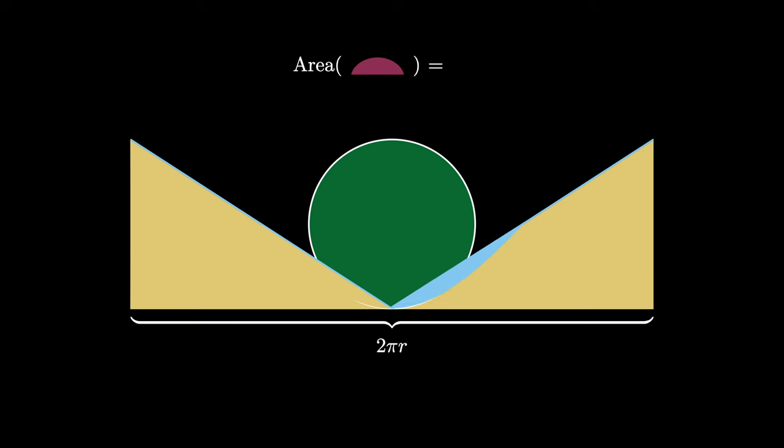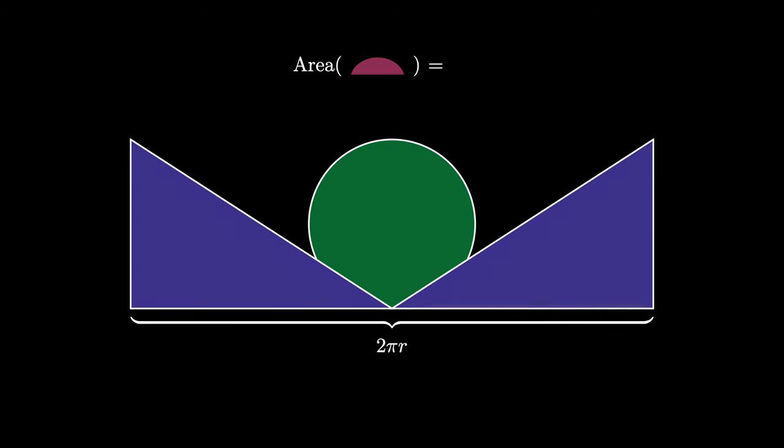After applying Cavalieri's principle and the symmetry argument, we see that we've decomposed the area under the cycloid into a circle of radius r and two triangles of height 2r and base π times r.